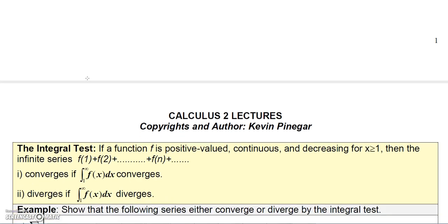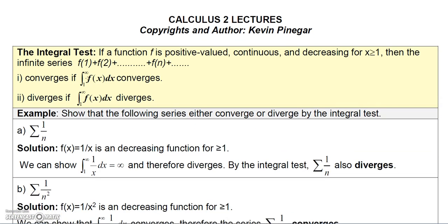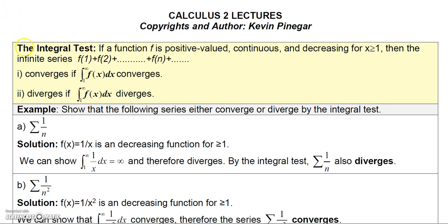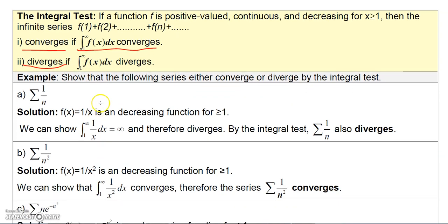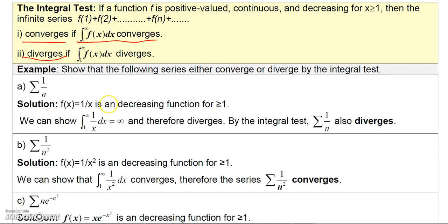This leads to the integral test. If a function is positive-valued, continuous, and decreasing for x greater than or equal to 1, then the infinite series f(1) + f(2) + ... converges if the corresponding improper integral from 1 to infinity converges, and diverges if the corresponding improper integral diverges.